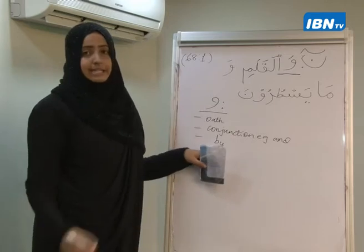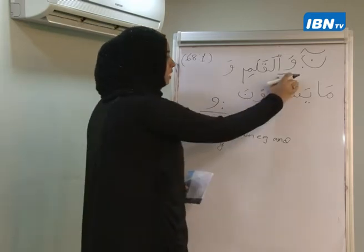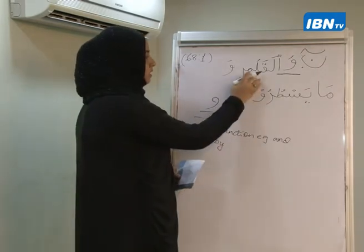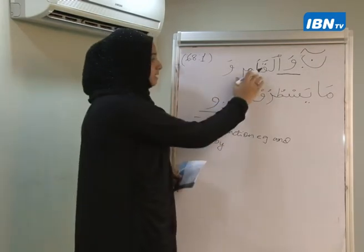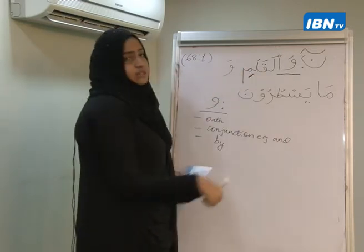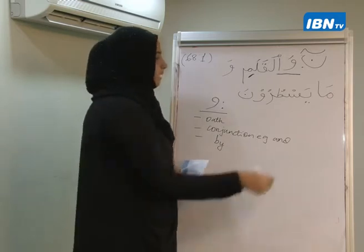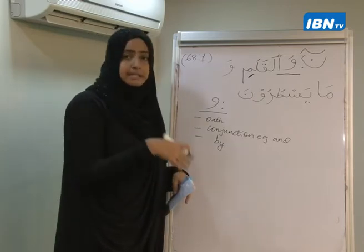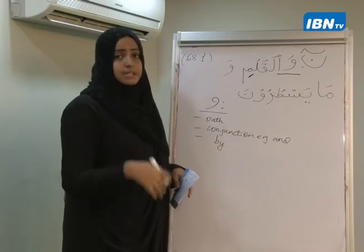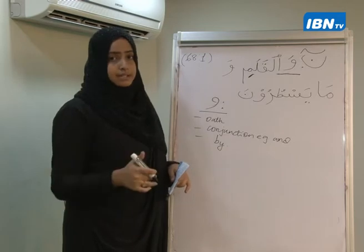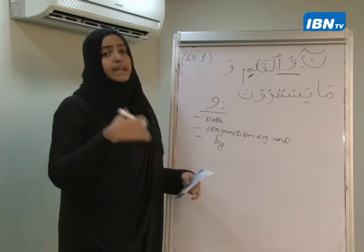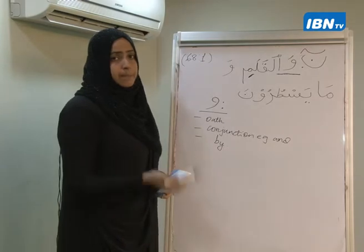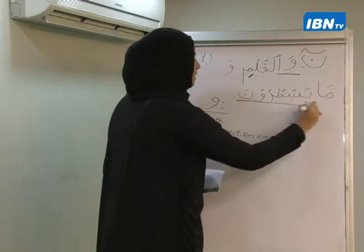In this sentence it is translated as 'by the pen.' Because of this وَا, the object — the قَلَم — carries a genitive sign, because it has been preceded by a وَا which means 'by.' Even if you look at Surah Al-Shams, it goes وَالشَّمْسِ وَضُحَاهَا — the word Shams carries a kasra because it has been preceded by وَا.